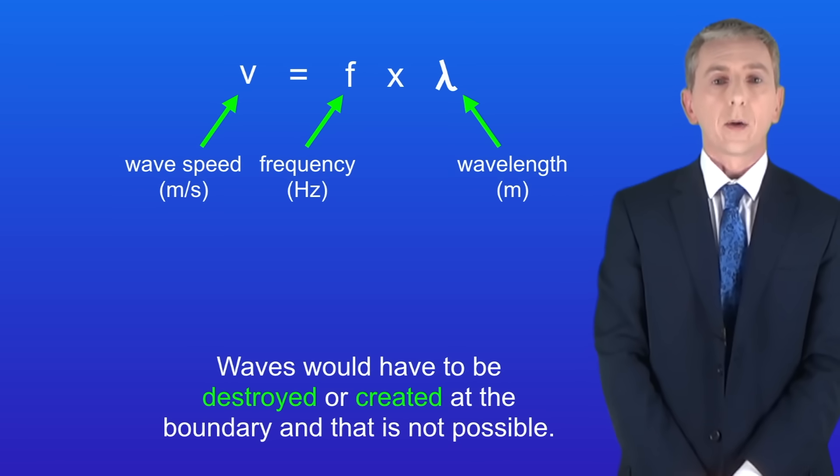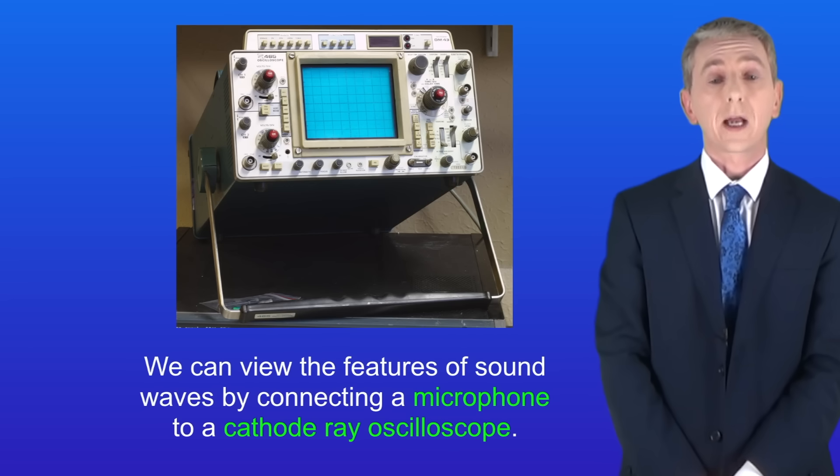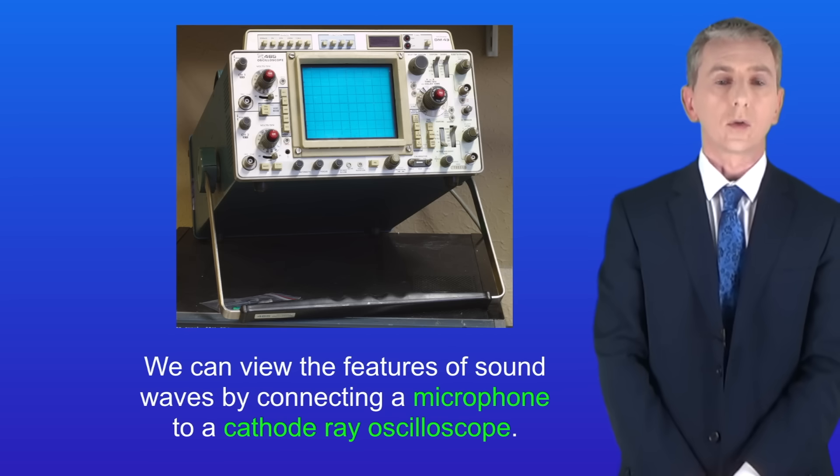Okay we're going to look now at how frequency and amplitude affect sound. We can view the features of sound waves by connecting a microphone to a cathode ray oscilloscope like this one. You may have used one of these in your school.